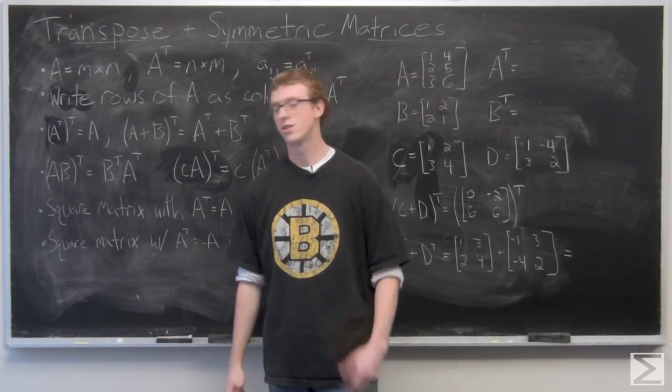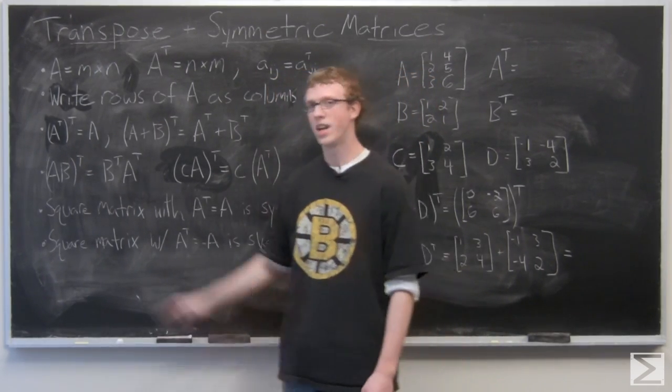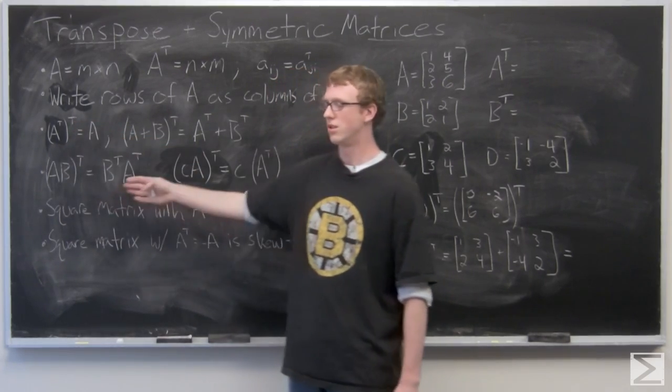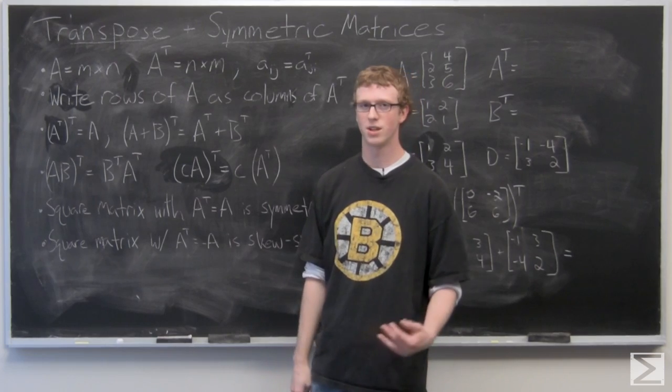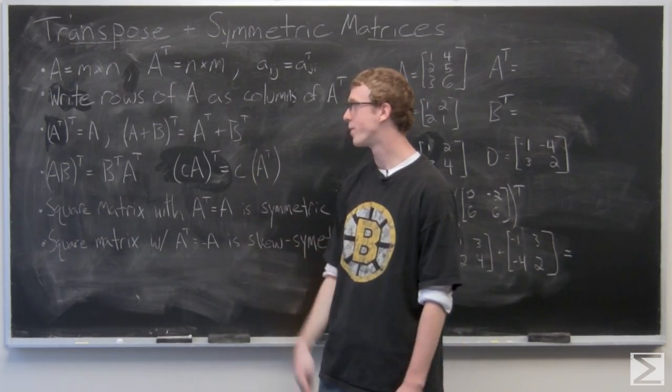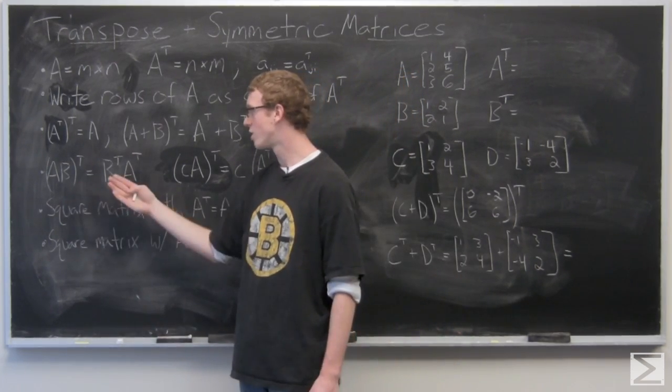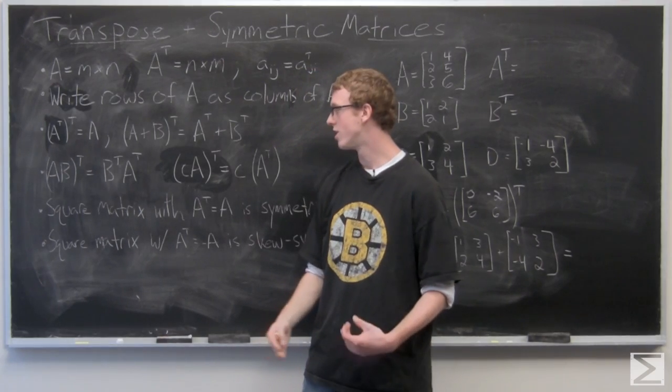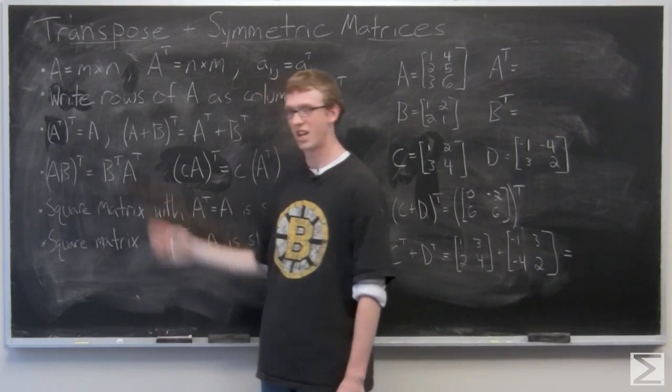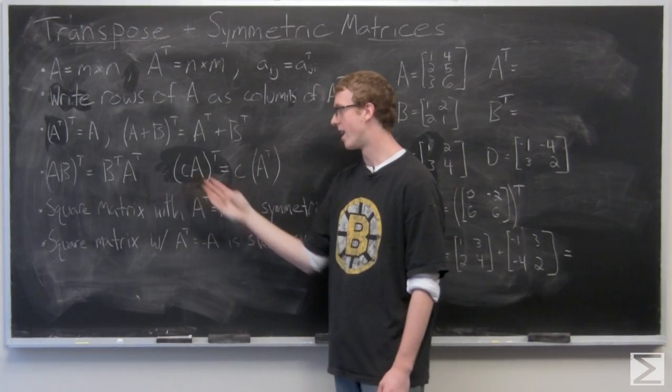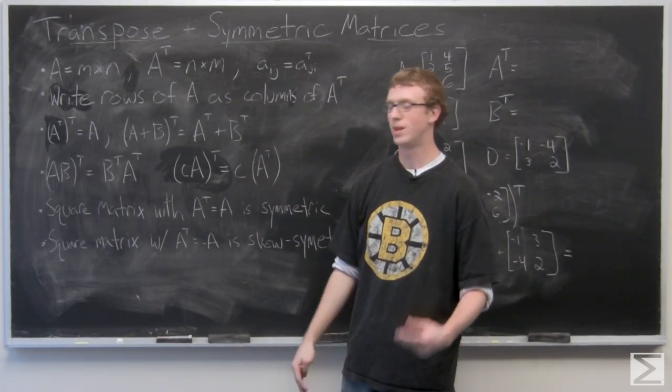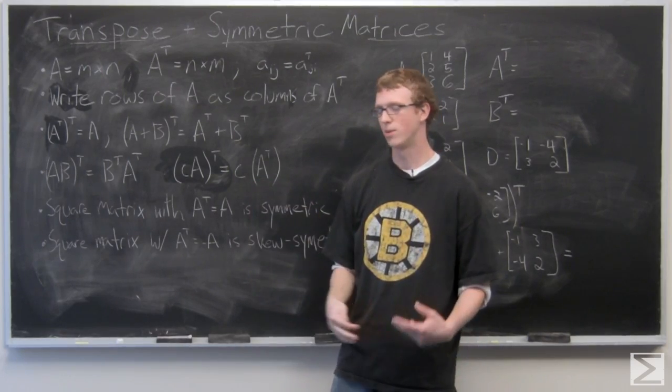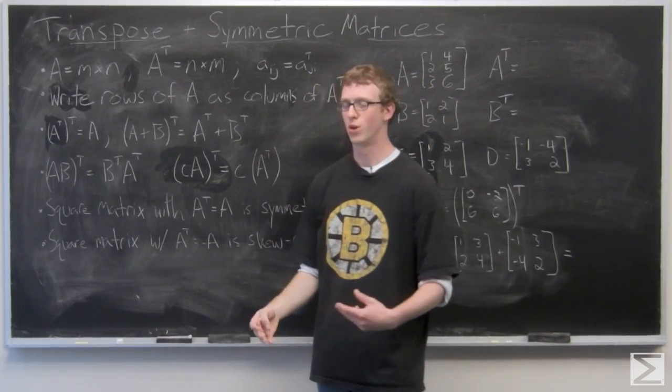There are some important properties of transpose. A transpose, transpose is just going to be the original matrix A. A plus B transpose is going to be A transpose plus B transpose. AB transpose is going to switch the order of multiplication and be B transpose times A transpose. And scalar multiple of A, CA transpose, is just going to be the normal transpose of A multiplied by C. So both work.